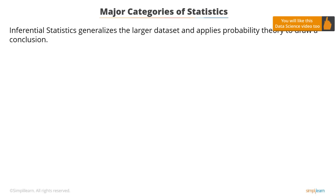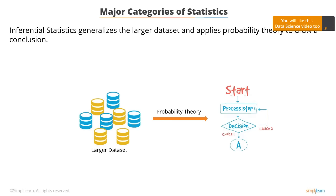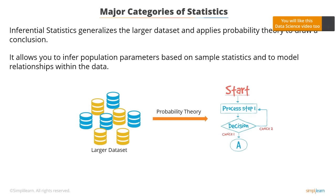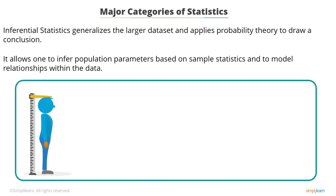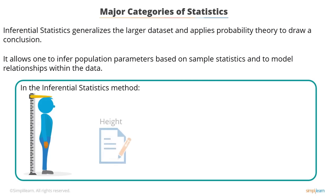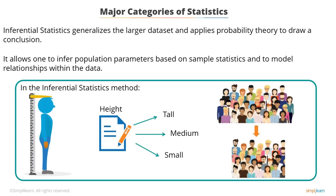Inferential statistics generalizes the larger data set and applies probability theory to draw a conclusion. It allows you to infer population parameters based on the sample statistics and to model relationships within the data. Modeling allows you to develop mathematical equations which describe the inner relationships between two or more variables. In inferential statistics, using the same height example, you would categorize height as tall, medium, and small, and take only a small sample from the population to study.